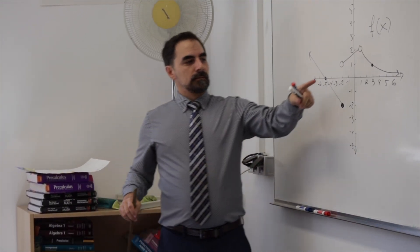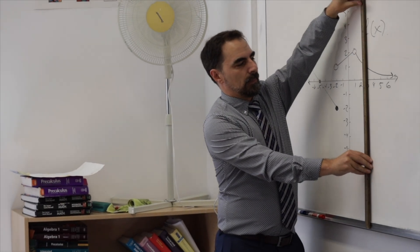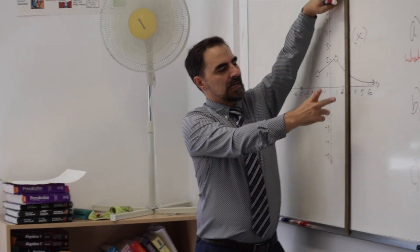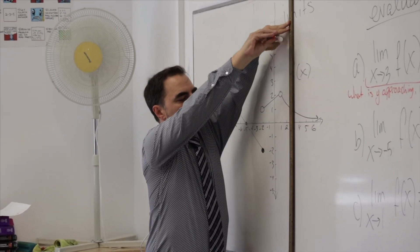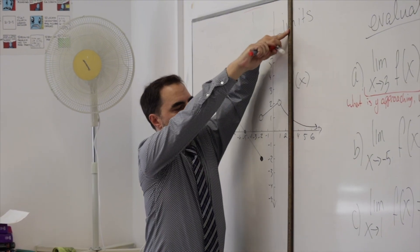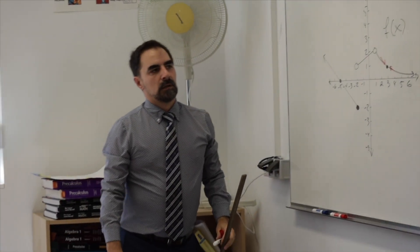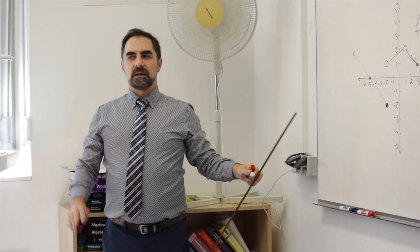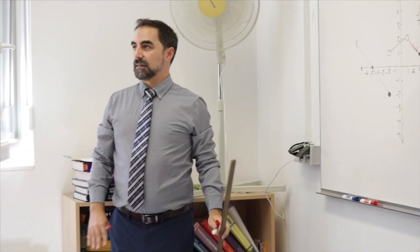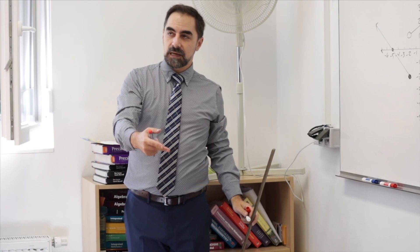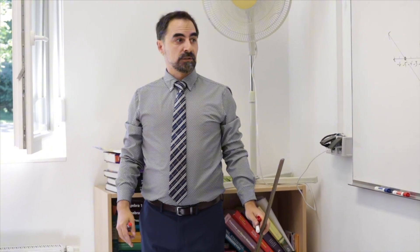So Alice, as the X value of our graph gets closer and closer to X equals three, what Y value does it look like the graph is getting close to? One. One, and that's it. When we're reading limits from graphs, honestly, it's never going to get harder than that. That is it. It's what does it look like the Y value is getting close to?